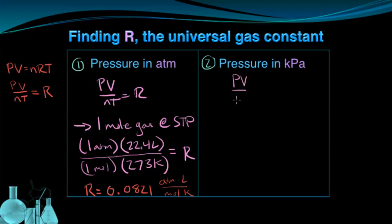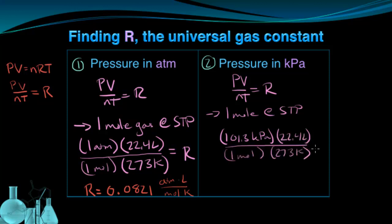Now let's run through that same process for when pressure is measured in kilopascals. Again, we consider one mole at STP. All of our numbers should be the same, except this time the standard pressure is measured in kilopascals, which is 101.3 kPa. So now the R, universal gas constant, when pressure is measured in kPa, is 8.31 kPa liters over moles Kelvin.